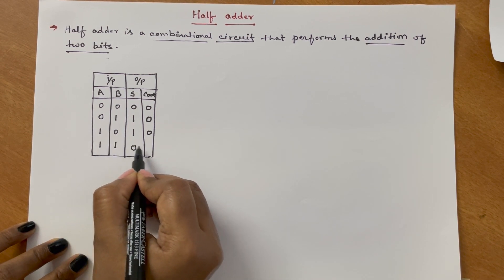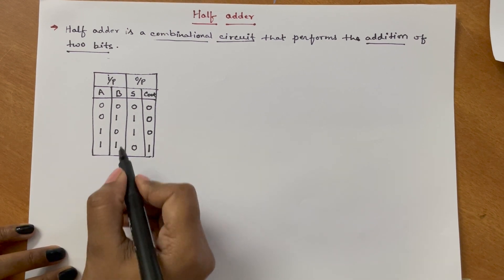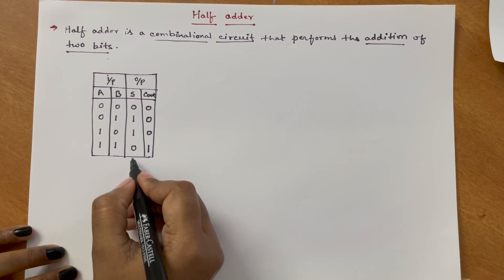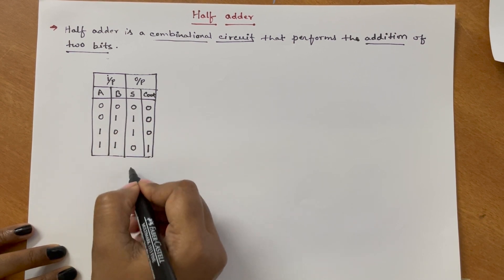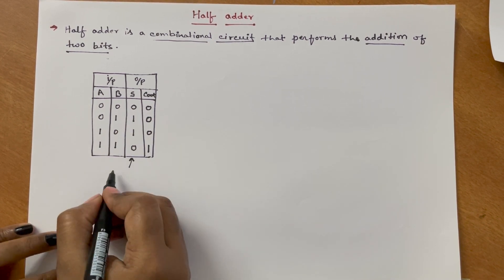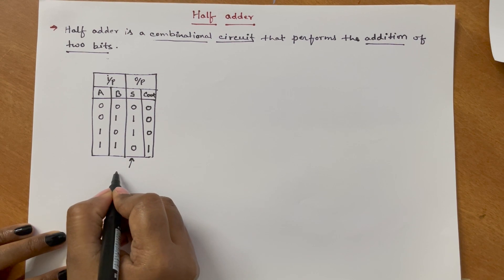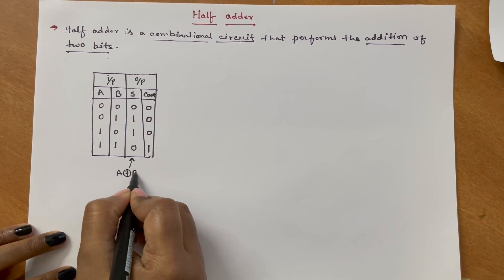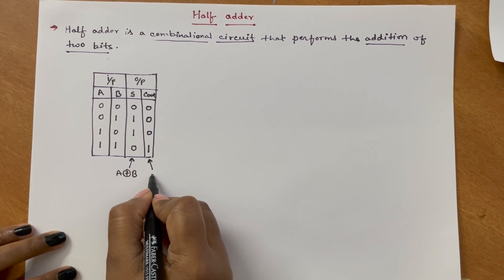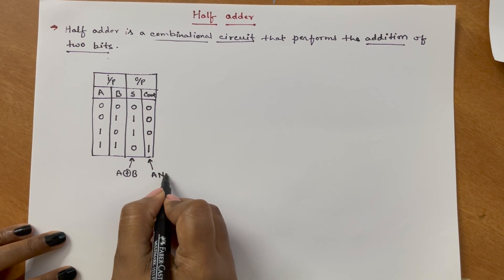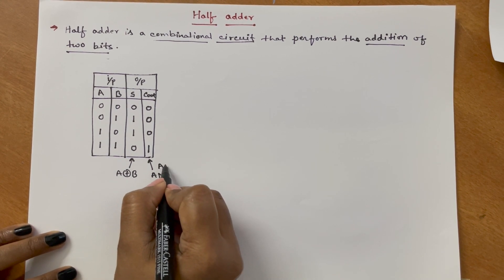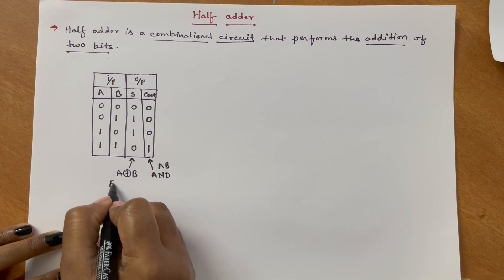By looking at this truth table we can see that the sum column represents the operation of XOR, and the carry column represents the AND operation — that is A·B.